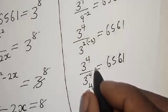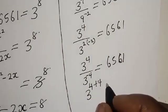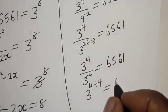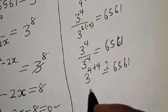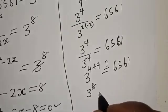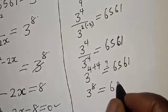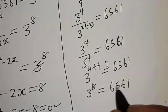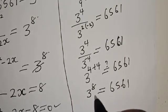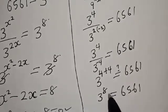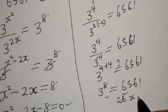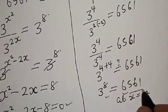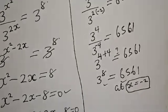The minus 4 moves to the numerator as plus 4, so we get 3 raised to power 4 plus 4, which is 3 raised to power 8 equals 6561. Since 3 raised to power 8 equals 6561, the left hand side equals the right hand side, which satisfies the given equation at s equals minus 2.